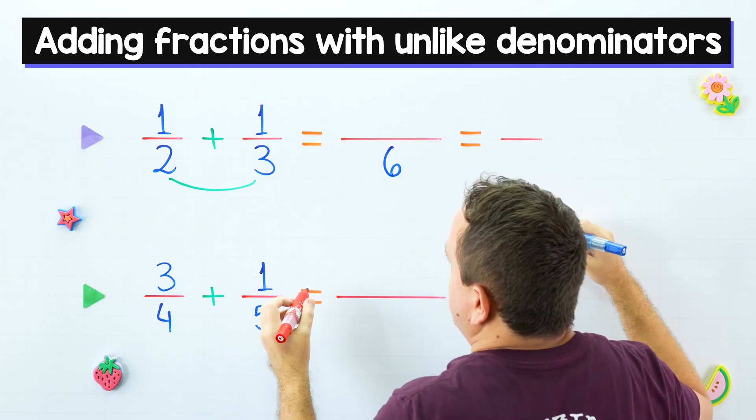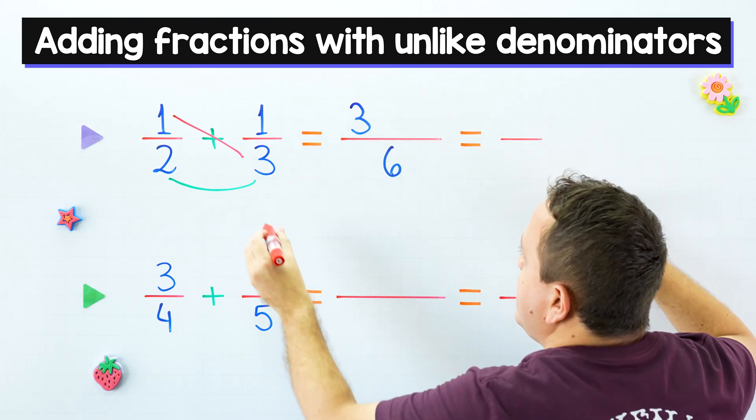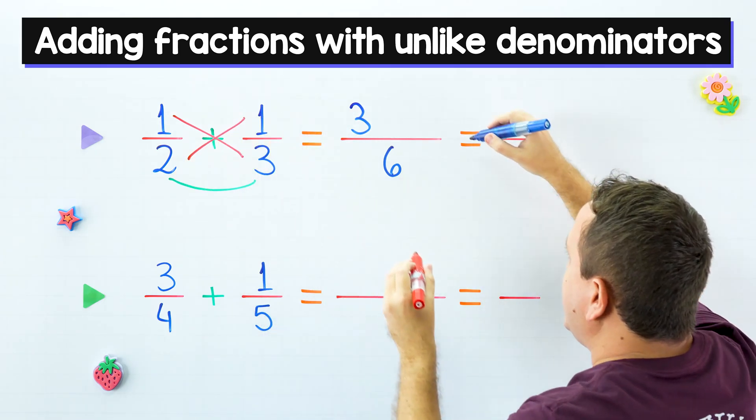And here comes the cross multiplication. First, one times three. One times three is three. And then two times one. Two times one is two.